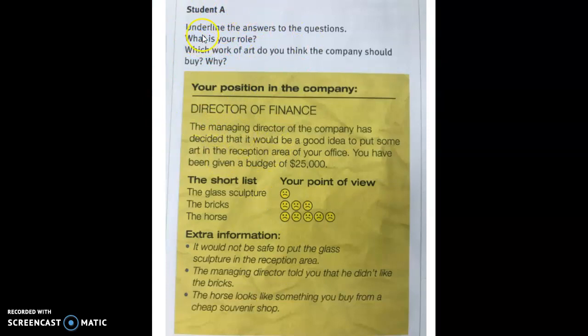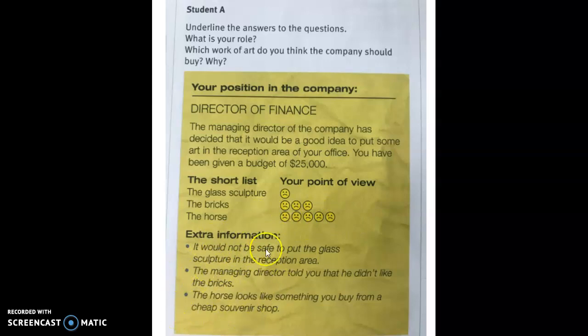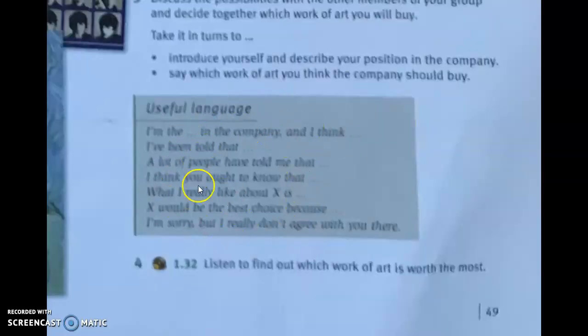The three role cards for A, B, and C each ask: what's your role, which work of art should the company buy, and why? For example, student A is the director of finance and dislikes the horse the most. Students prepare ideas, then everybody talks together and compares ideas about what the money should be spent on, deciding together at the end which work of art to buy. Make sure they use the functional language of evaluating and, if possible, the ever words too. After feedback on their decision, they can listen to find out which work of art is actually worth the most.